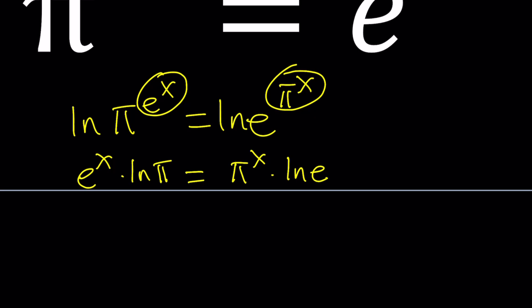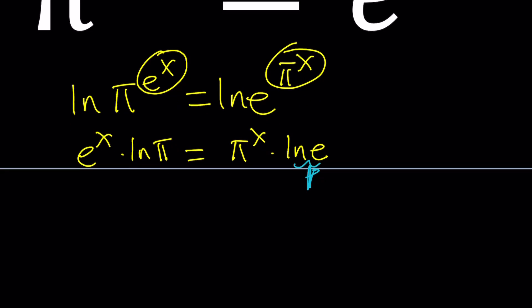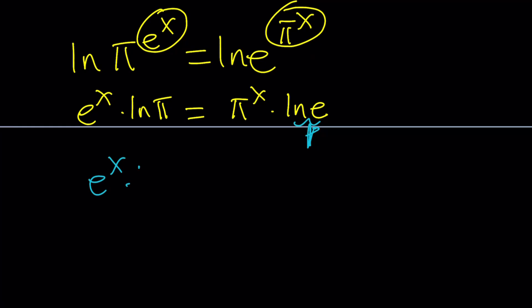As you know, ln e is equal to 1, so we can forget about it because it's 1. And this gives us e to the x ln π equals π to the power x.